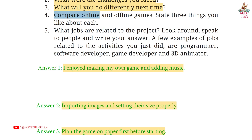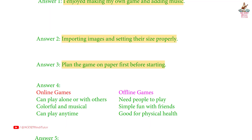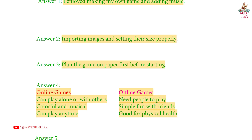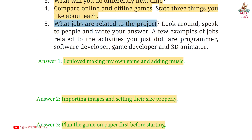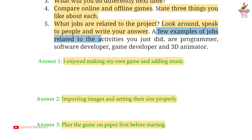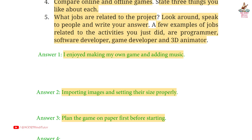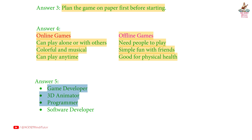Question 4: Compare online and offline games. State 3 things you like about each. Answer: Online games - can play alone or with others, colorful and musical, can play anytime. Offline games - need people to play, simple fun with friends, good for physical health. Question 5: What jobs are related to the project? Answer: Game developer, 3D animator, programmer, and software developer.